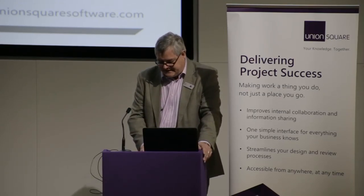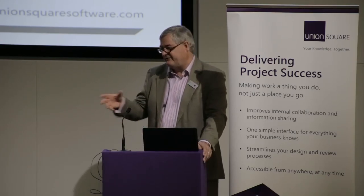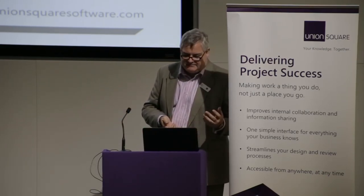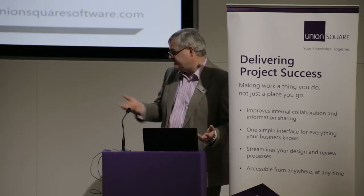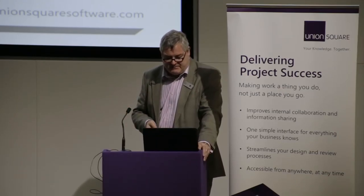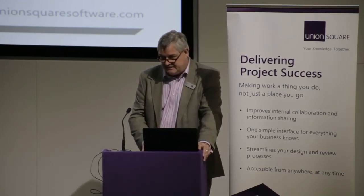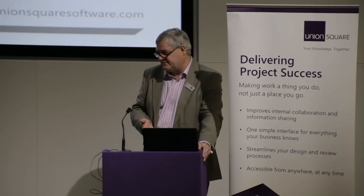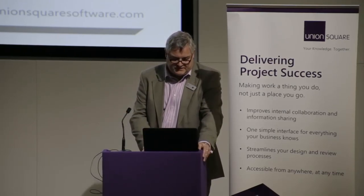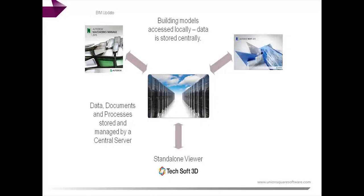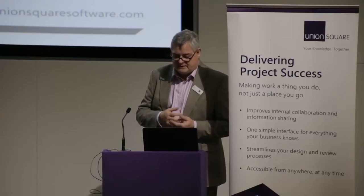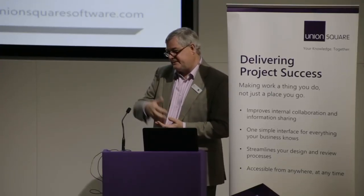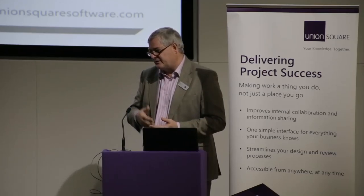Putting everything in the model results in huge models that have to be distributed, and that doesn't work. We want to keep the model small — storing just the minimum geometric information in the model and everything else elsewhere: specifications, O&M, processes, RFIs raised in relationship to elements in a model. For distribution, everyone needs an up-to-date version. We have document distribution in Union Square, the extranet which will be available this year, and traditional methods like Dropbox — though those aren't auditable and lack a full audit trail.